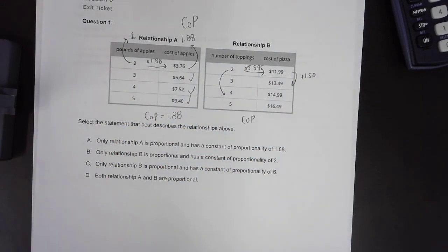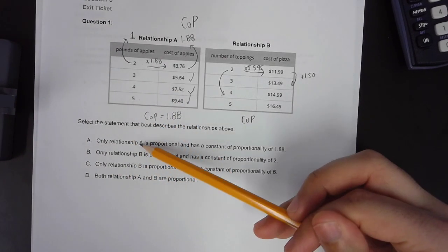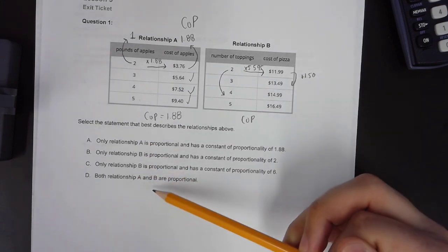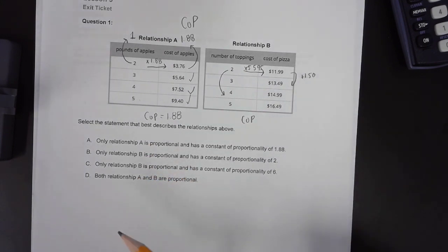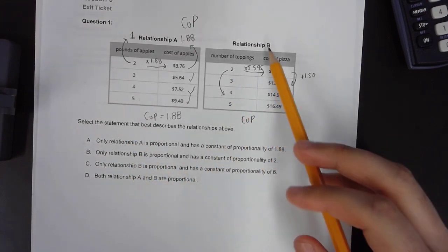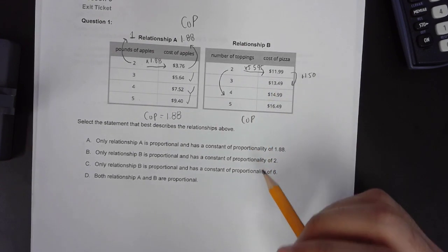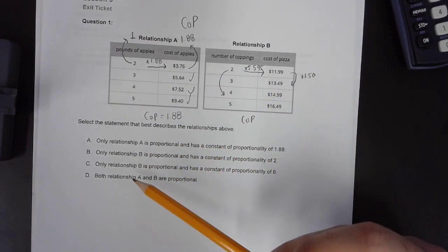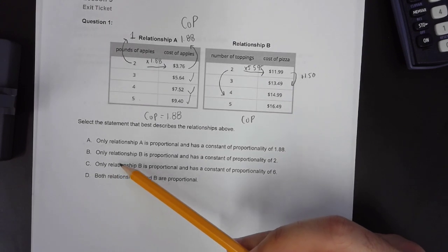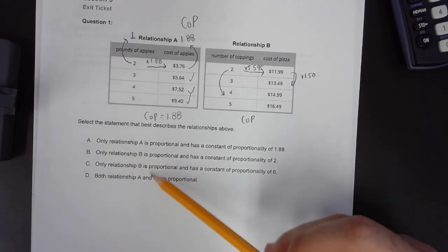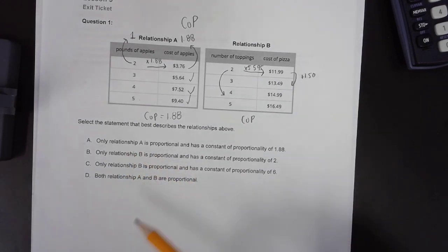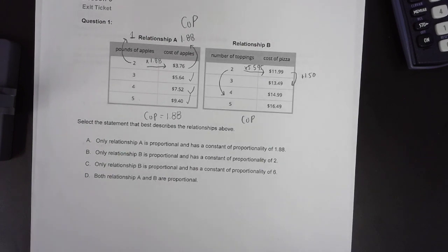That matches answer choice A. A quicker way to do this is to look at the answer choices first. And if you notice, all of the answer choices state that B is proportional, with the exception of A. If I started solving with relationship B and noticed that relationship B does not have a proportional relationship, I could have eliminated answer choices D, C, and B because they all tell me that B is proportional. Hope you enjoy.